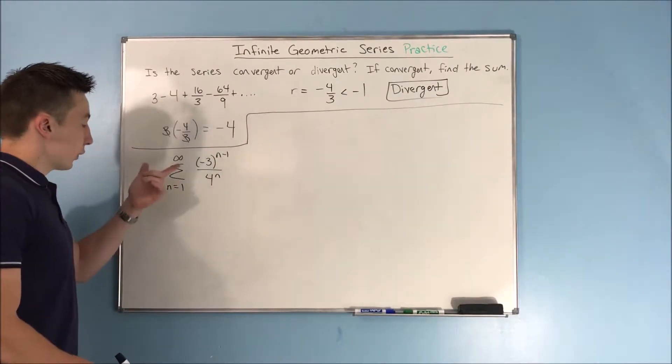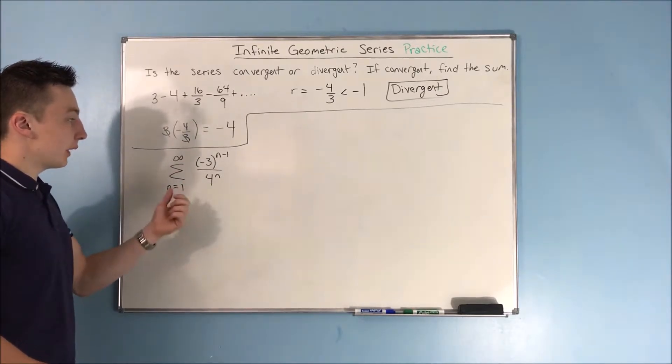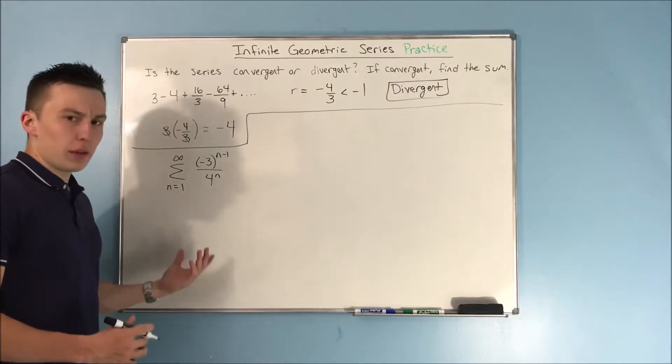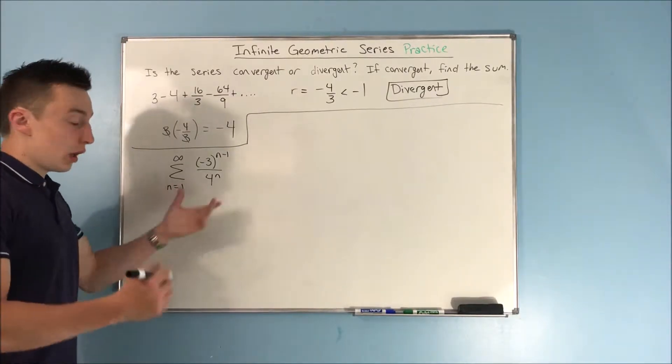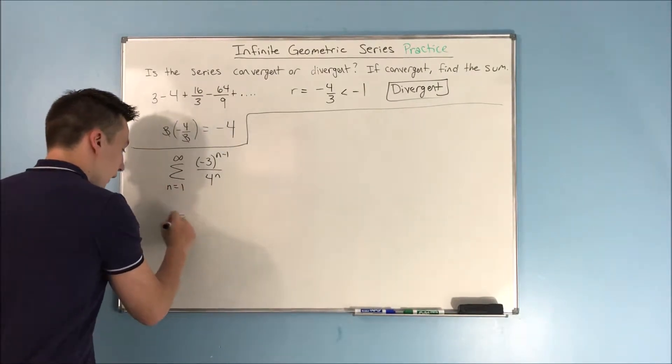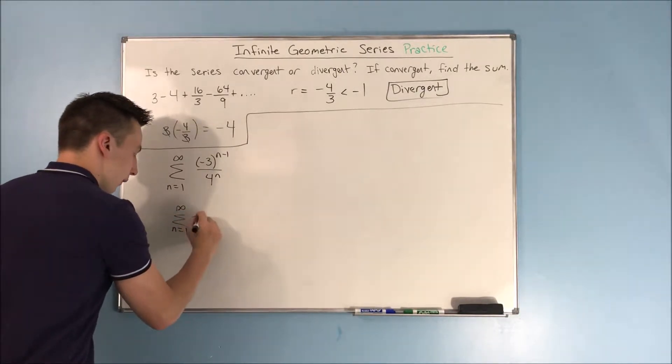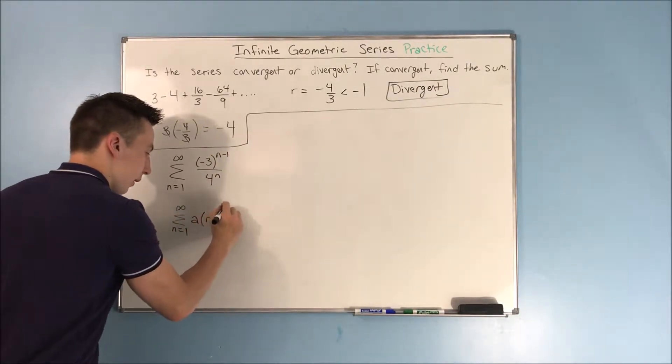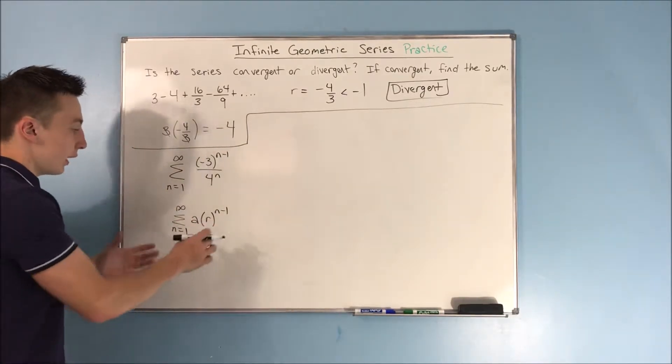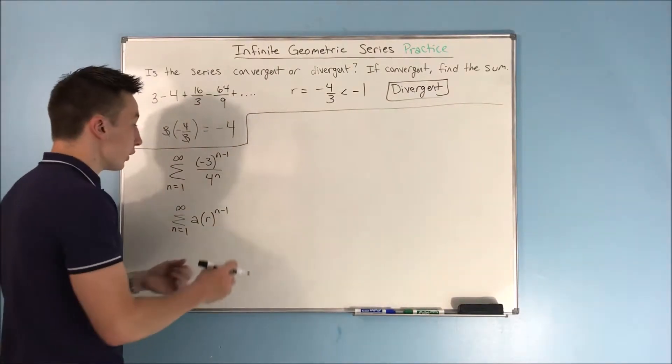Our next series is going to be the sum from n equals 1 to infinity of negative 3 to the n minus 1 over 4 to the n. And for this, all we need to do is remember our actual geometric series for the summation notation looks like A times R to the n minus 1. So, we need to get a common ratio that's to the n minus 1 power.